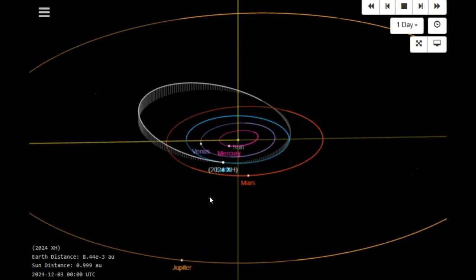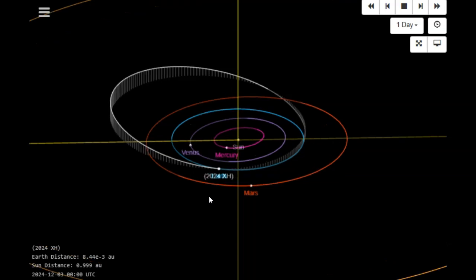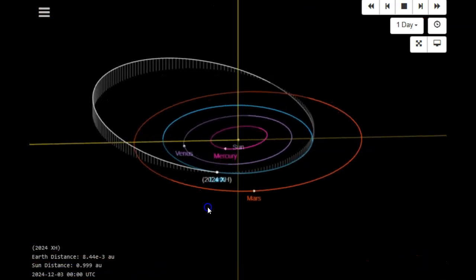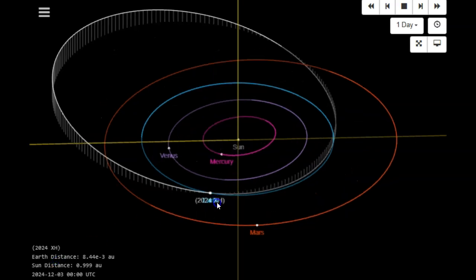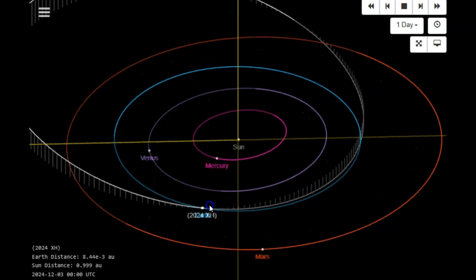Ladies and gentlemen, we have a near-earth object space rock inbound for a very close approach tomorrow, December 4th, 2024. This information was just released by the JPL, the Jet Propulsion Laboratory. The space rock is 2024 XH, and it will be passing between Earth and our moon.